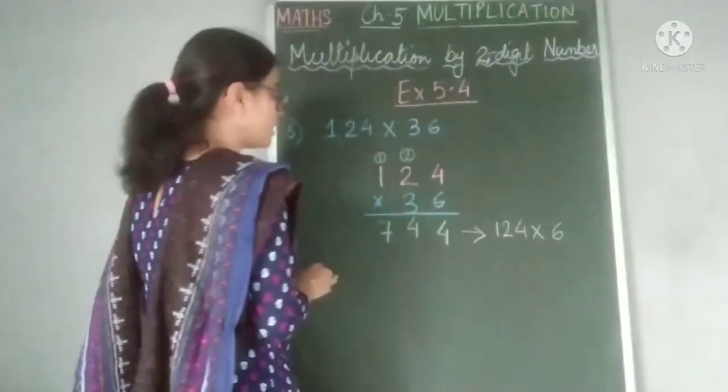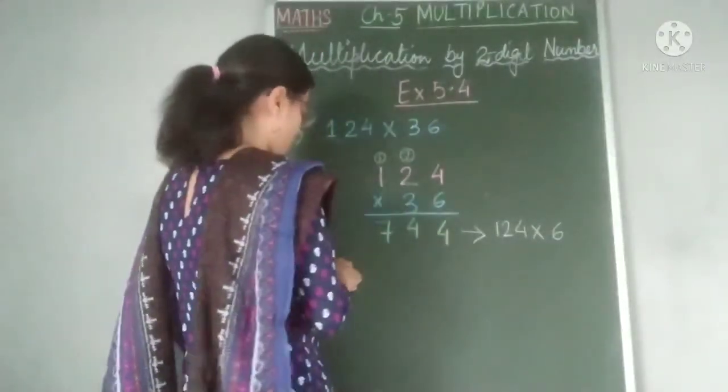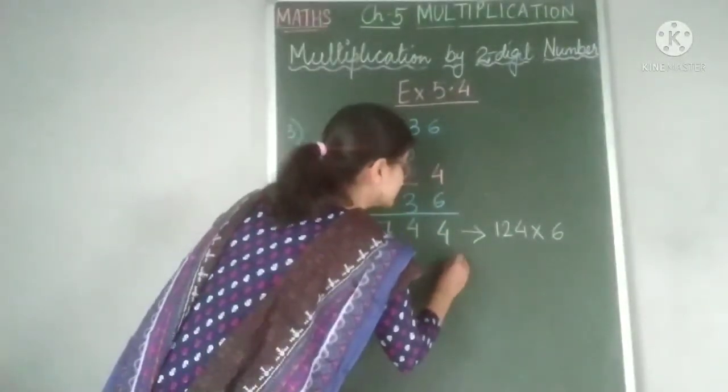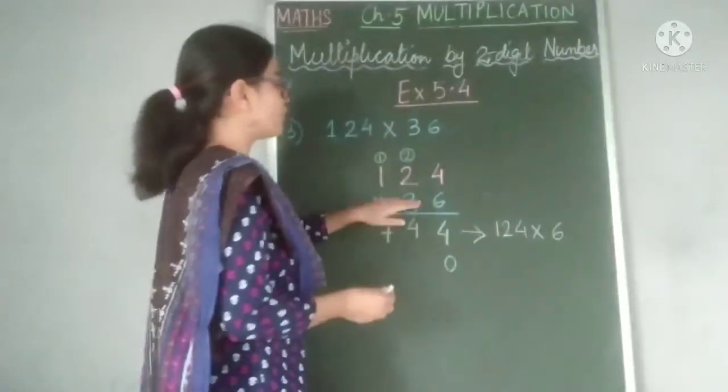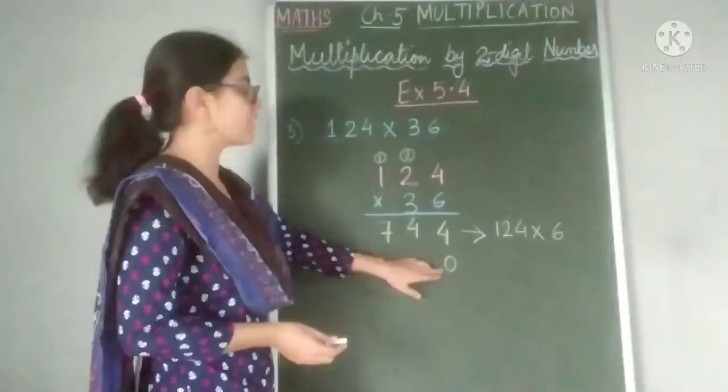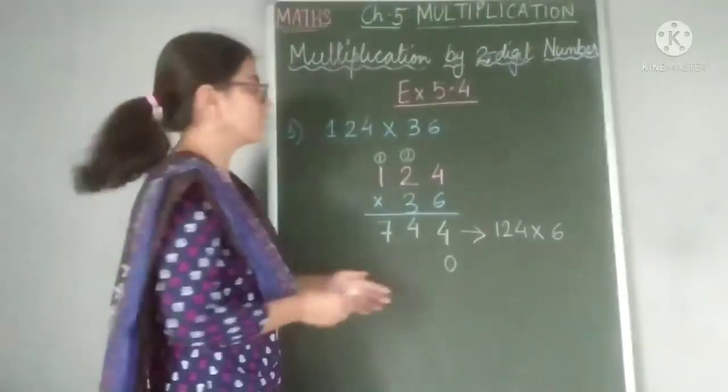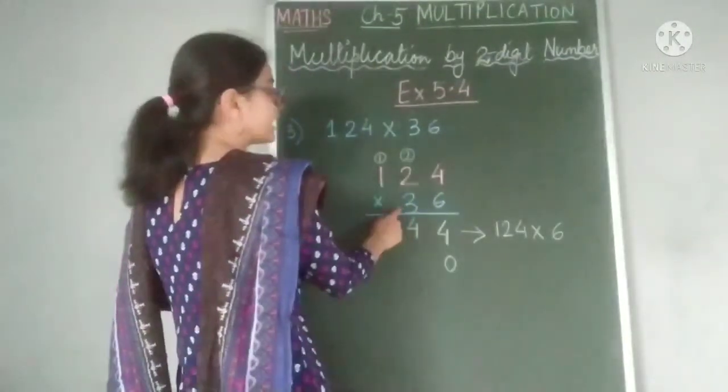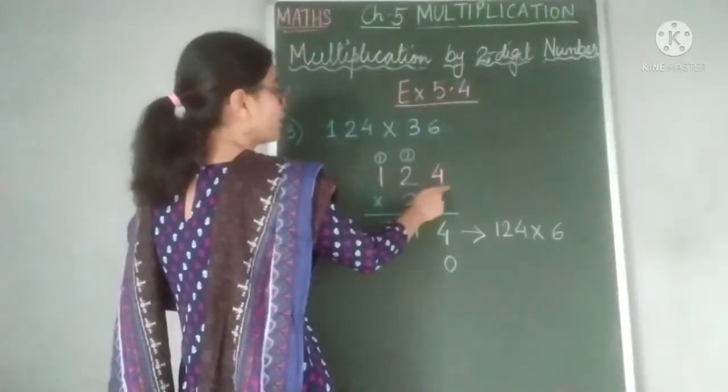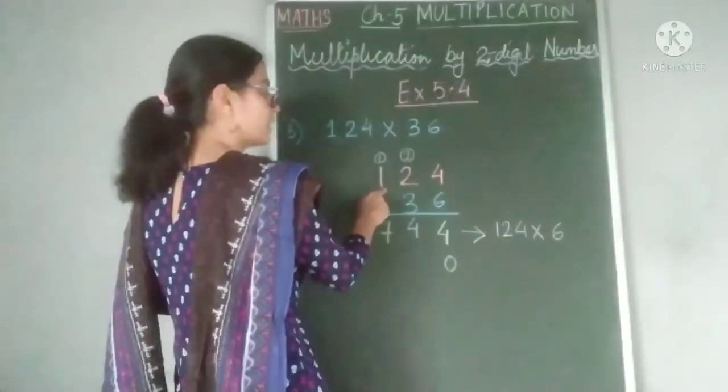Now, what do we do? Here, you can either put a cross or simply put a 0. Why? Because now we are coming to the tens place. So here we have to add one 0. Now, we take up the second digit of the multiplier and we multiply all the 3 digits of the multiplicand by it.